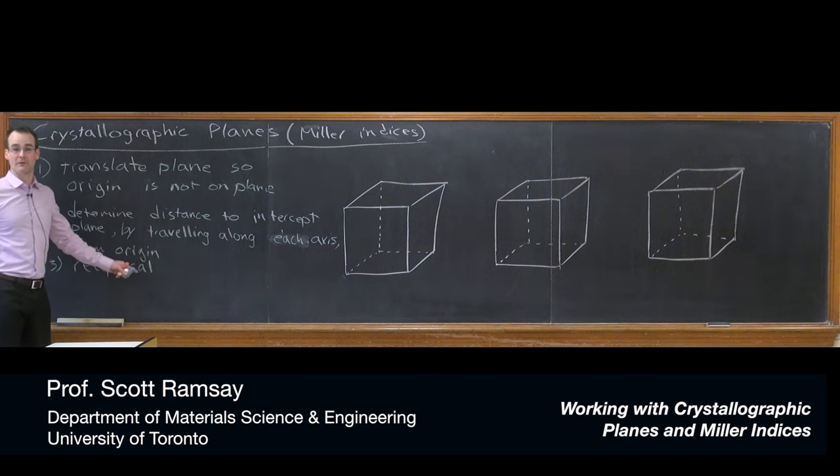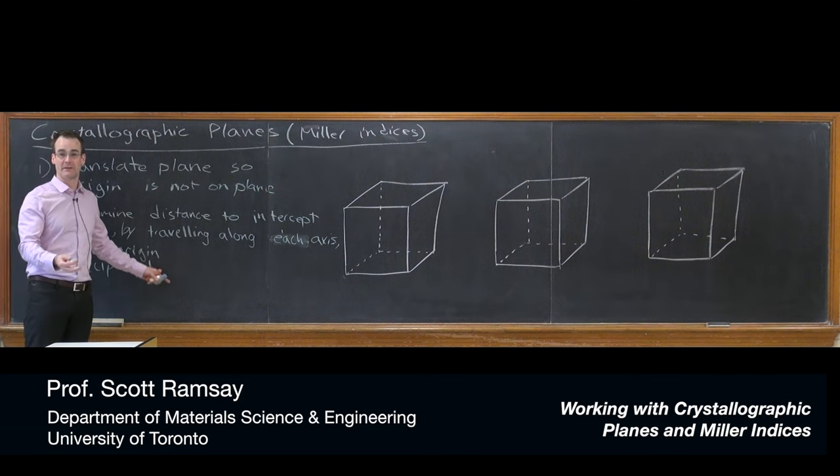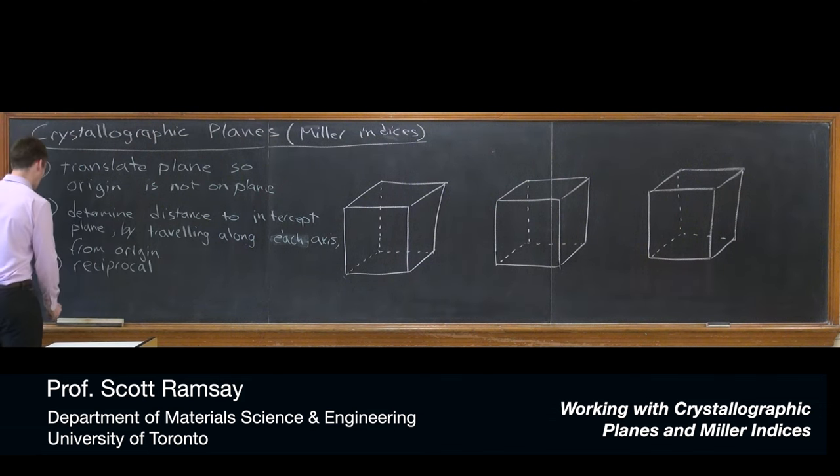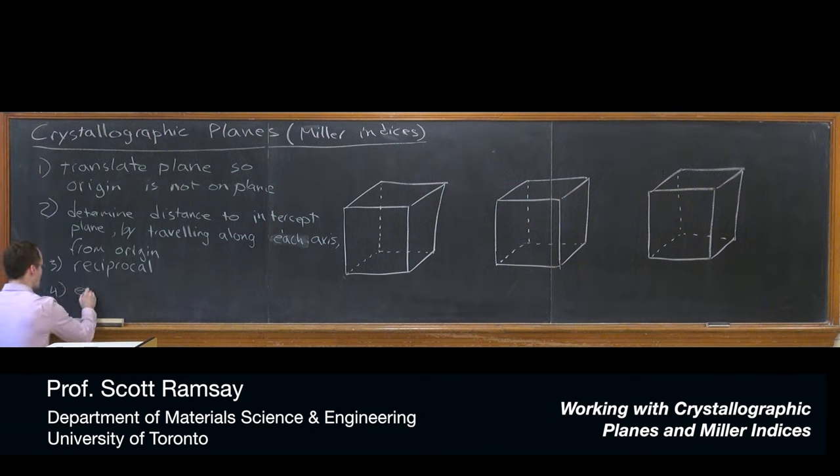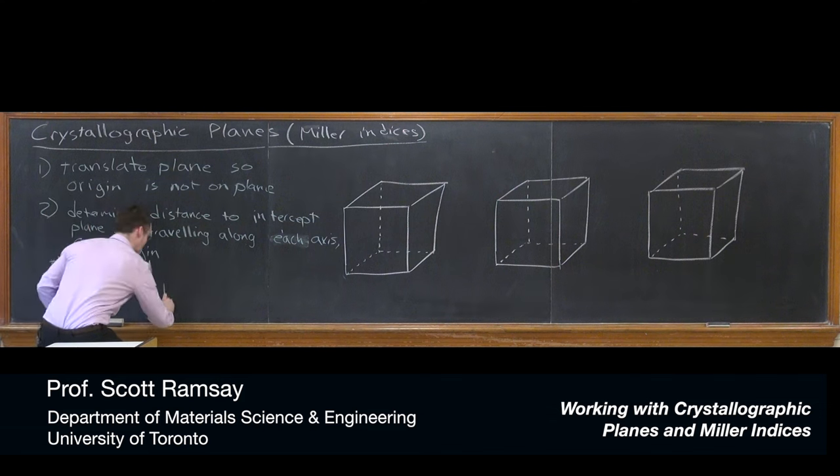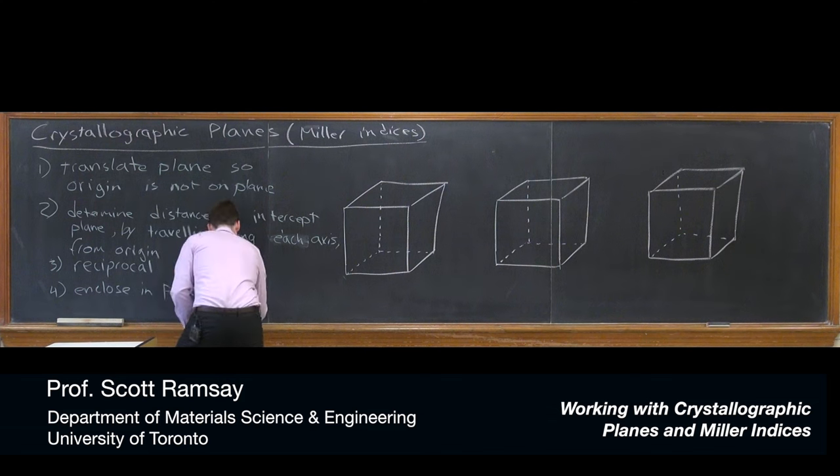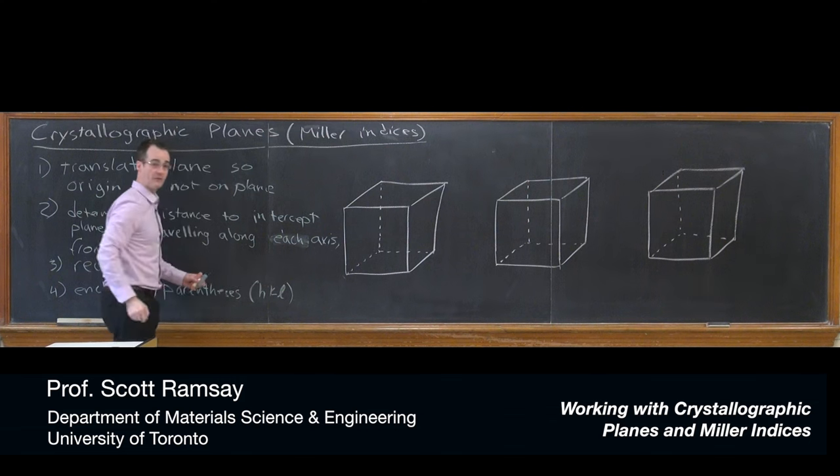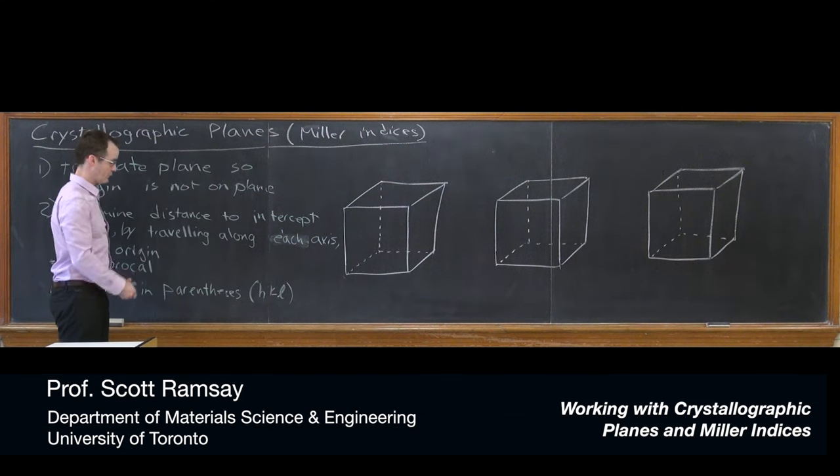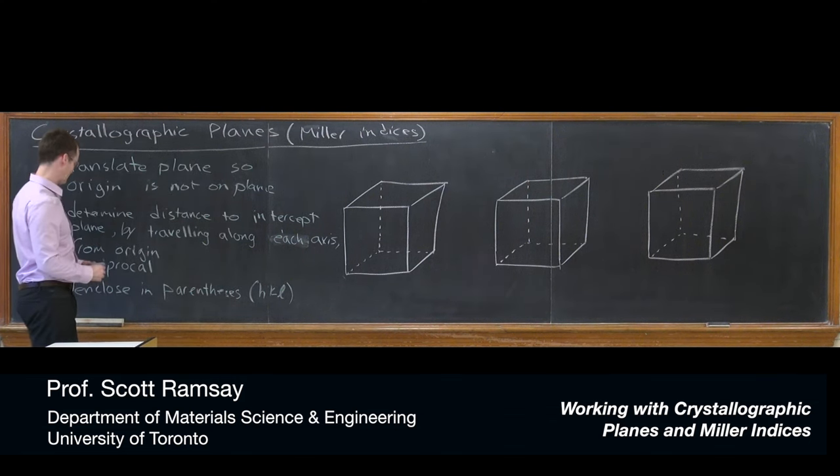Even if there's no infinity in the particular plane you're working with, you still take the reciprocal to be consistent. Then we enclose in parentheses, and often we use the placeholder letters H, K, and L to refer to general Miller indices for a plane.